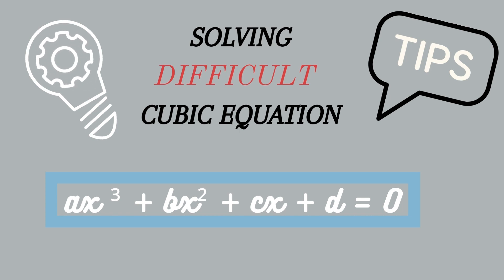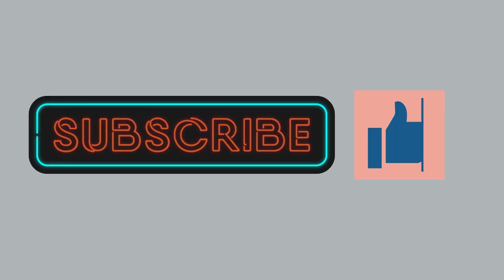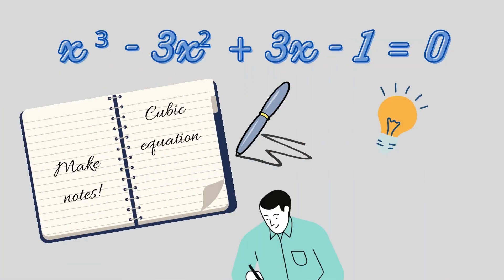This trick is very useful in most cases. Let us consider an example of a cubic equation: x³ - 3x² + 3x - 1 = 0.